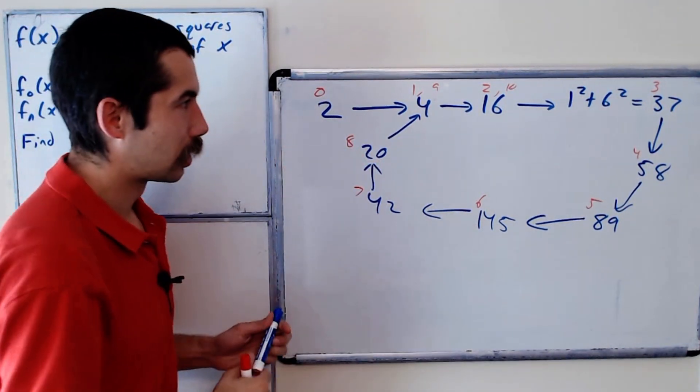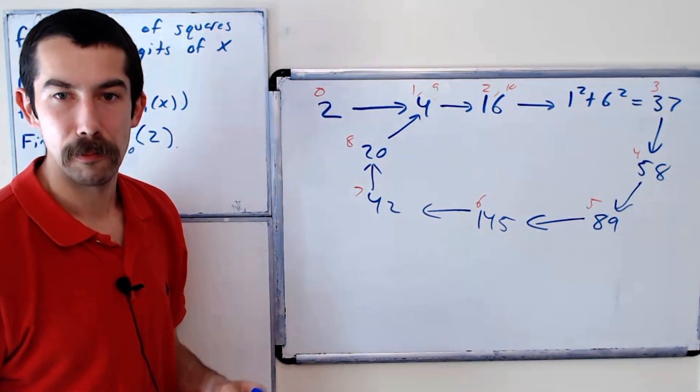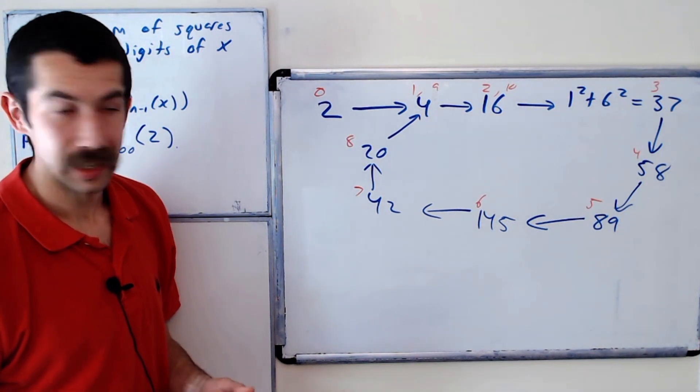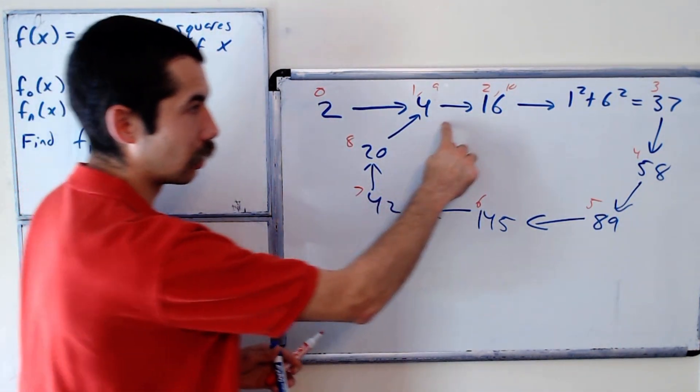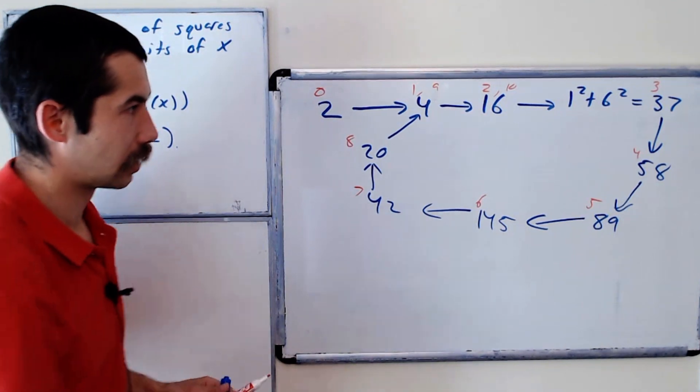So notice they match if they're the same number mod 8. Right, why is it 8? Our loop has 8 numbers in it.